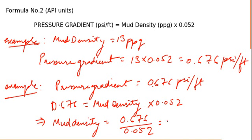This gives 13 ppg, obviously because I've taken the same values. The purpose was to show how to use this formula to find mud density if you know pressure gradient.